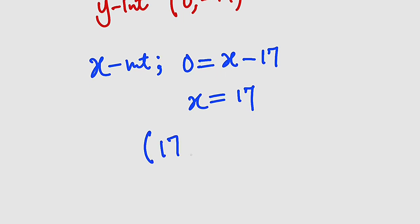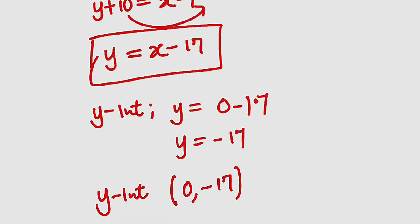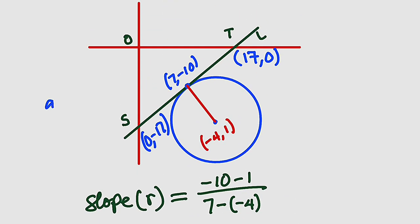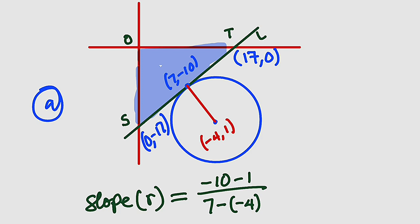So the x-intercept is at the point (17, 0) and the y-intercept is at the point (0, −17). Therefore T is (17, 0) and S is (0, −17) — that answers the first question. Now the second question asks us to find the area of triangle OST. The area of a triangle is half the base times the height. Both the base and height are equal — the distance from the origin down to S is 17.